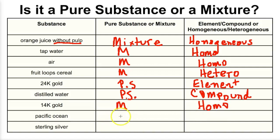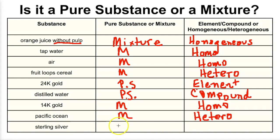The Pacific Ocean is also going to be a mixture, but it's totally different throughout, so that's going to be heterogeneous. Sterling silver is an alloy — it's silver with some other metals mixed in — so that's going to be a mixture, and that is going to be a homogeneous mixture, the same throughout.